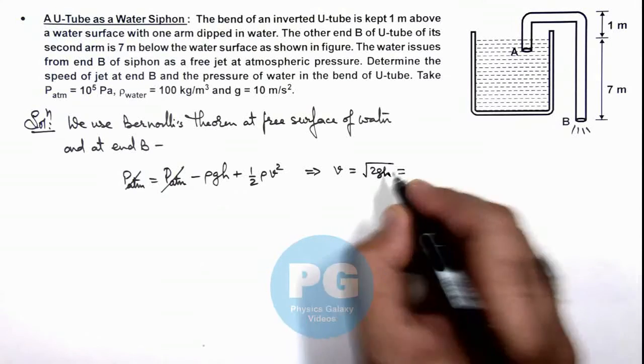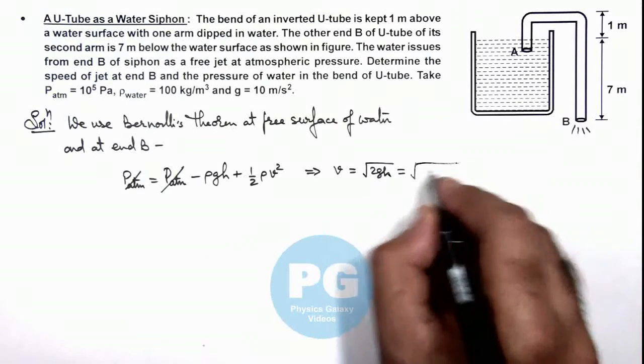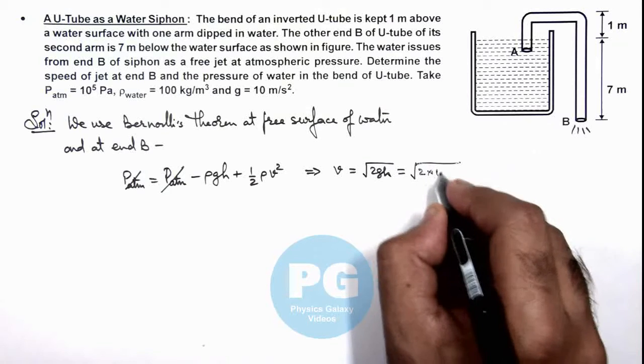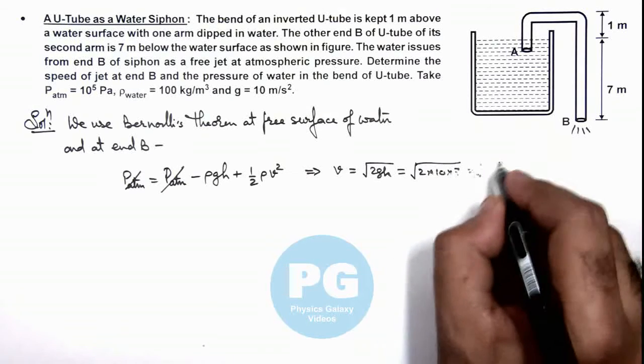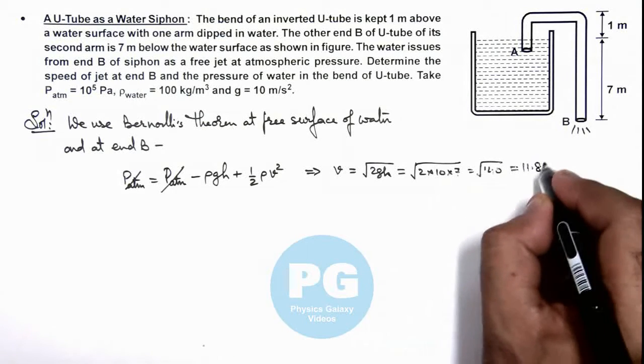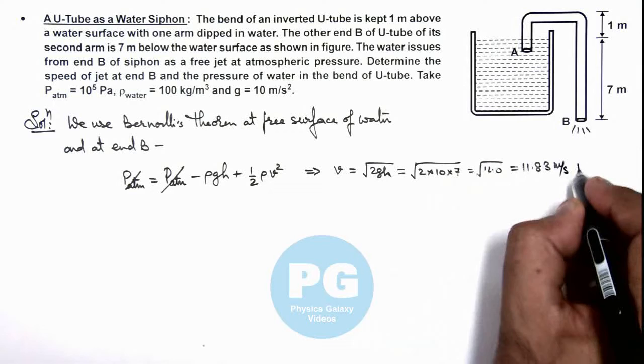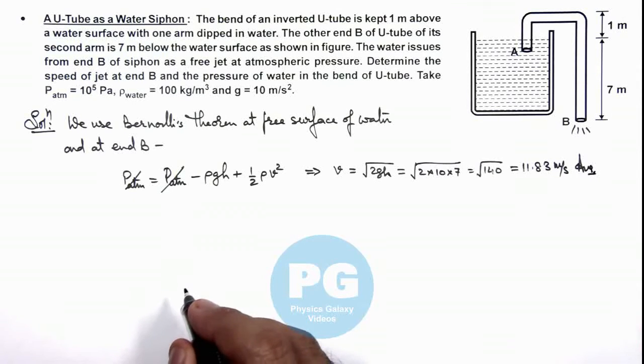And here h we can substitute as 7 meters, so this gives us √(2×10×7) = √140, which is 11.83 m/s. That is the result of this problem for the velocity of jet coming out.